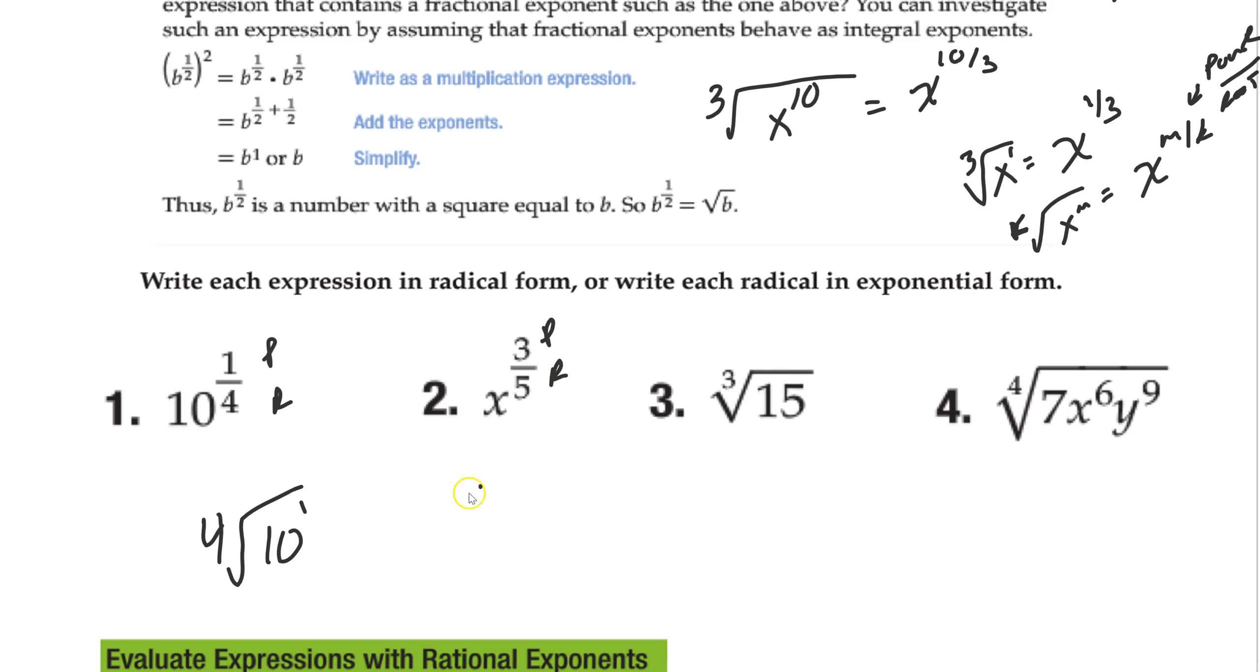Same thing here. Power root, the fifth root of x to the third. We're going to rewrite this one. So 15, power is 1, so 1 over 3. It's ending here. 7 to the 1 fourth, x to the 6 fourth, and y to the 9 fourth. You can reduce that if you want, but that's the general idea. It's how to rewrite it.